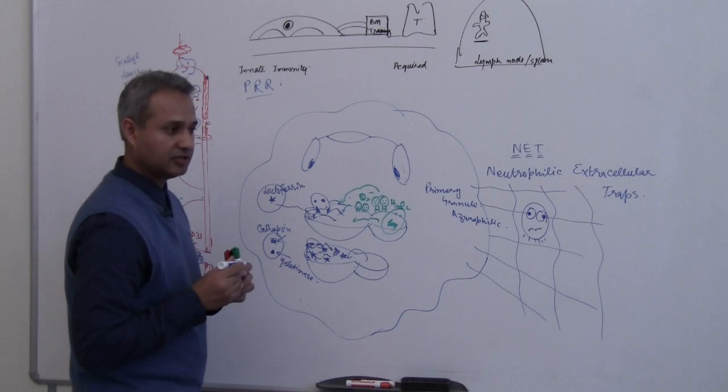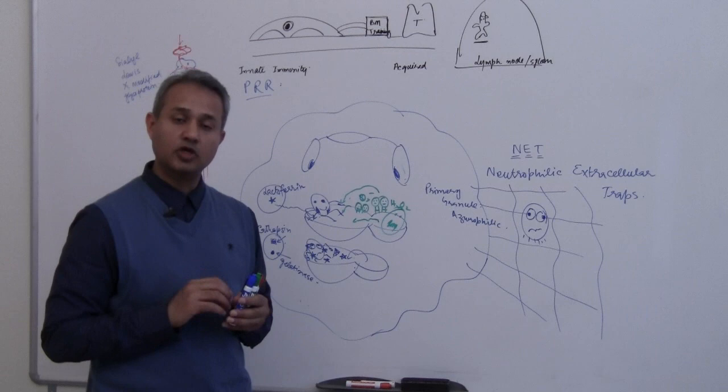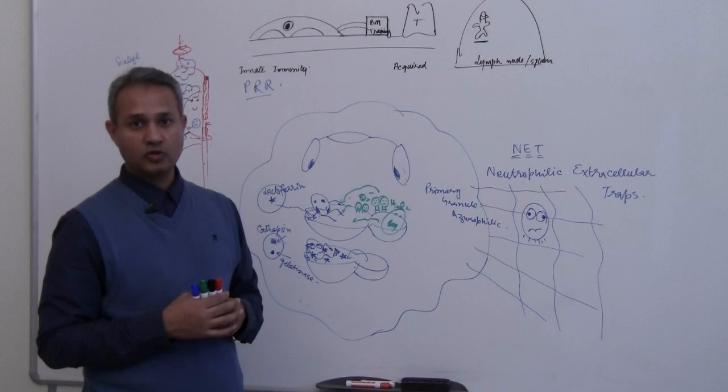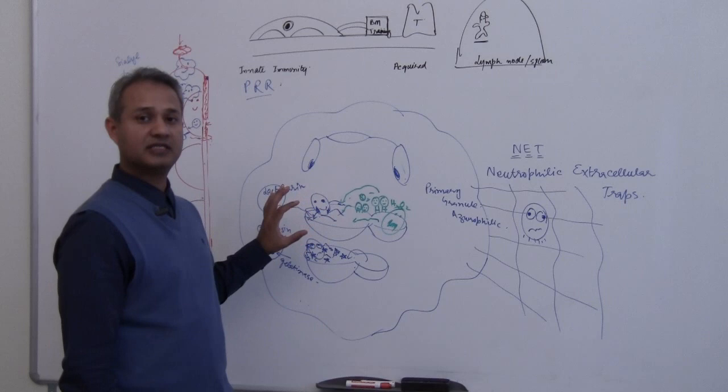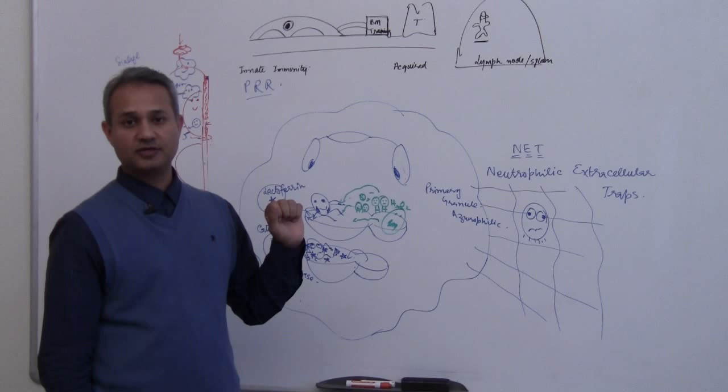Lactoferrin is present in the secondary and primary one has gotten elastases, collagenases, acid proteases, neutral proteases, myeloperoxidase and so on. So these are the killing factories or substances present inside a neutrophil which would cause the pathogen to be degraded.